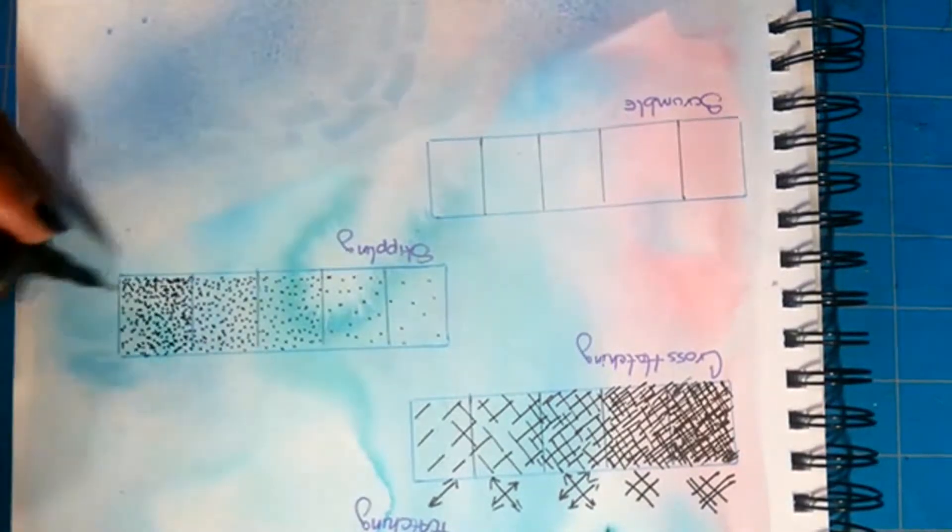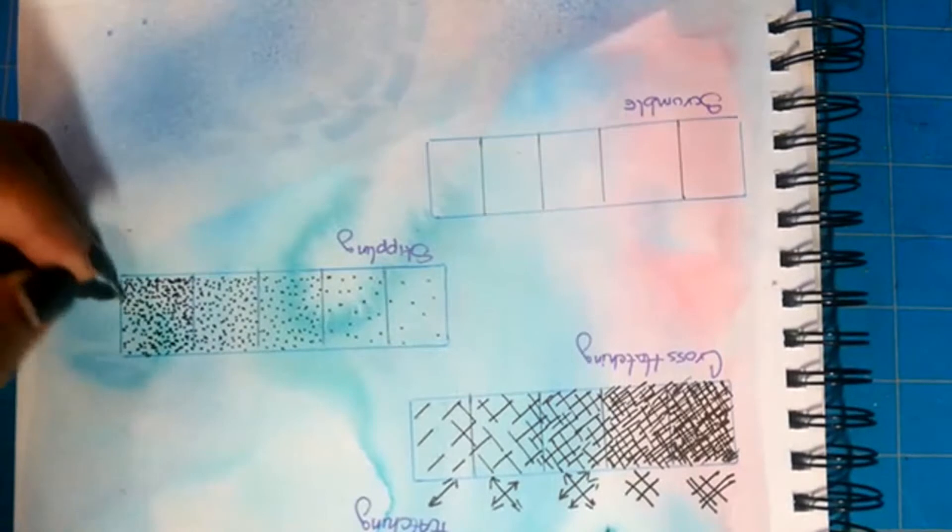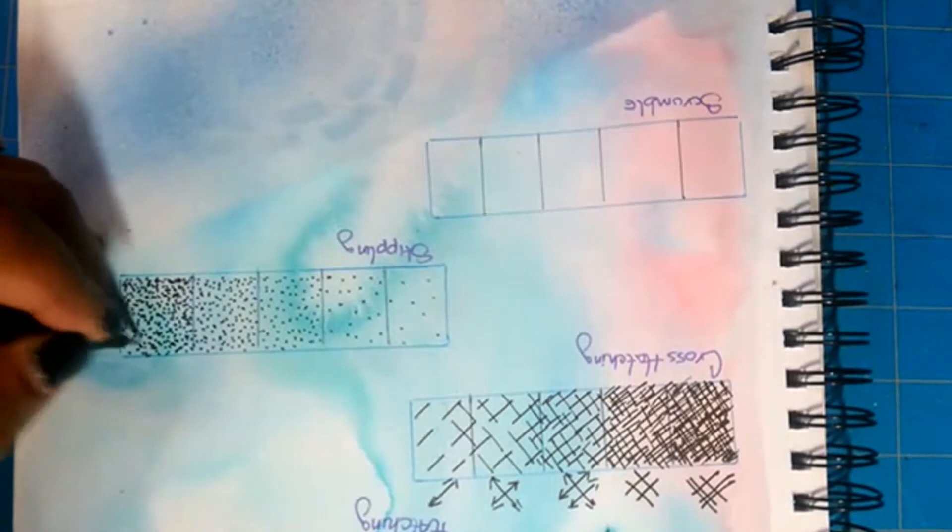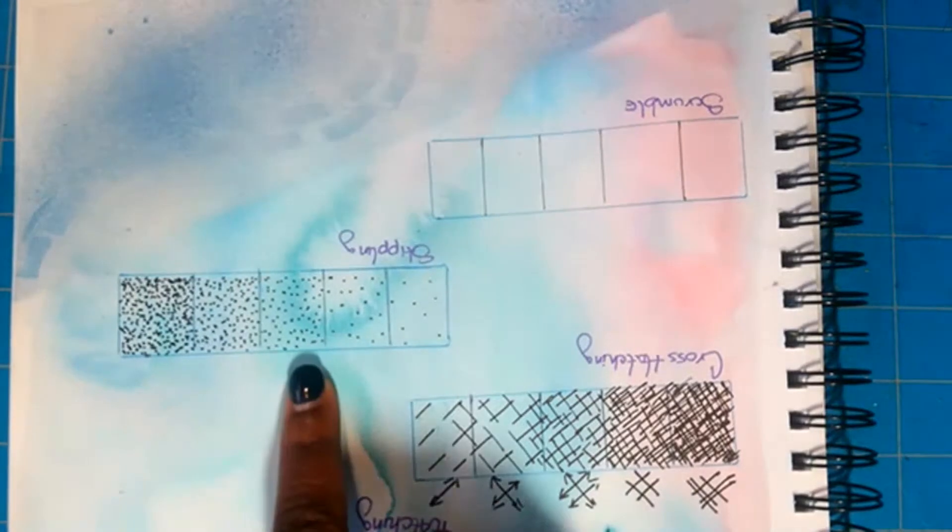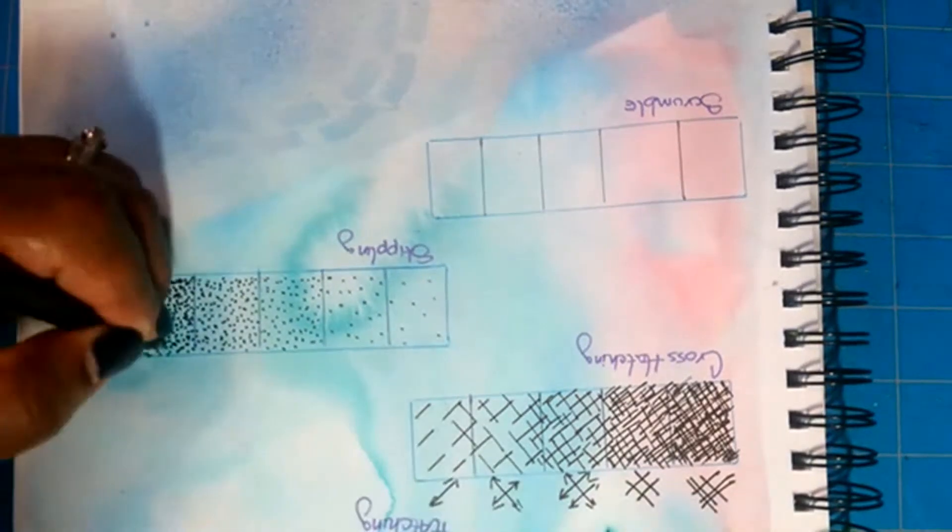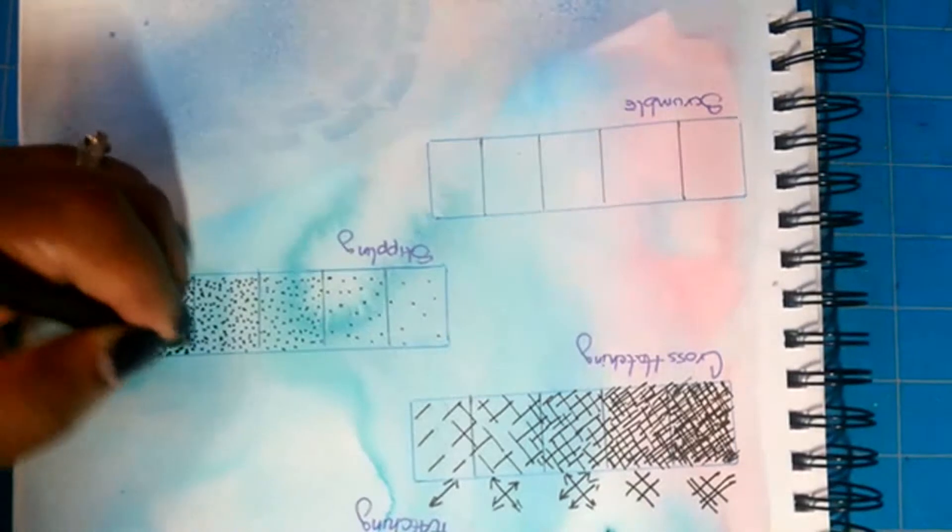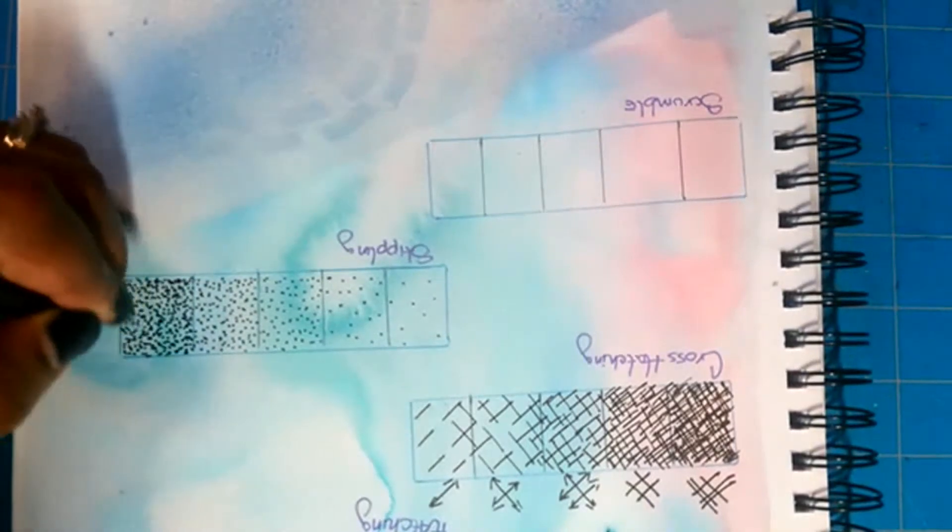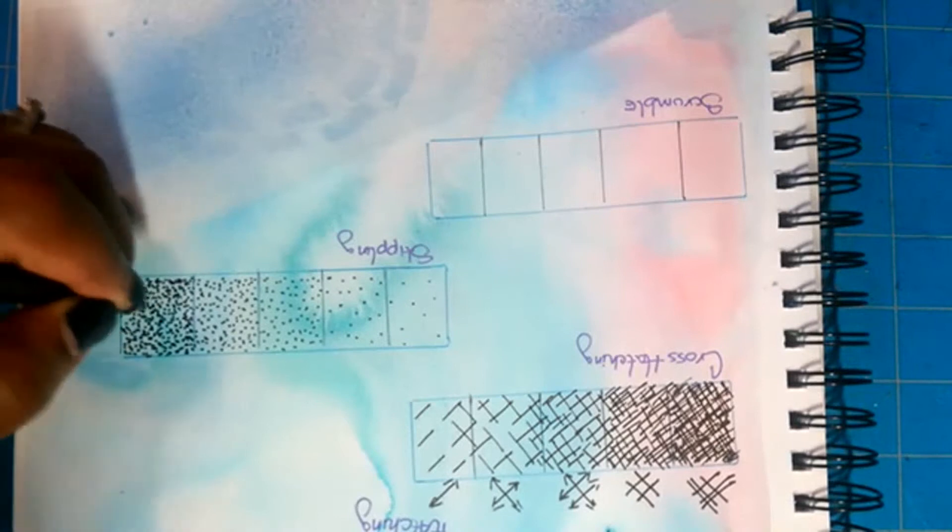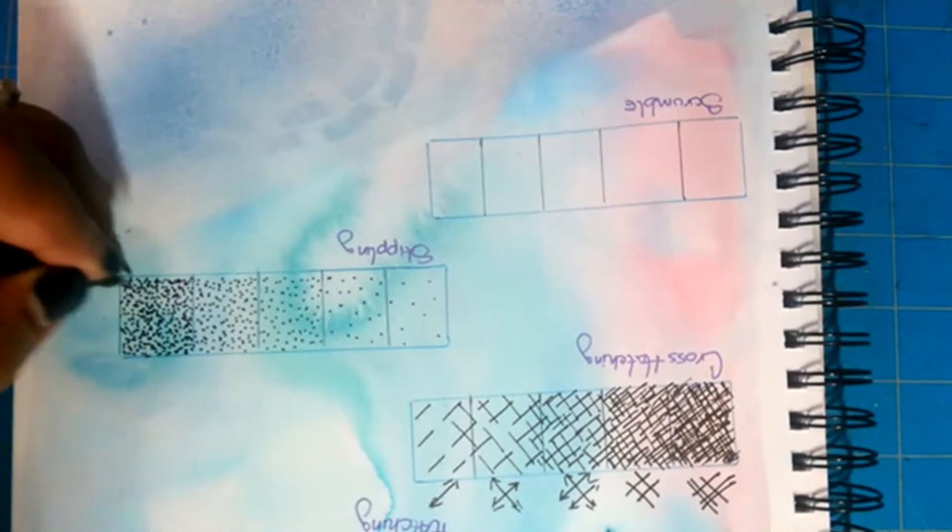And it should be really becoming darker than box four. And again, just like on the hatching and the cross hatching, what I'm noticing is that box four and three are very similar. I'm going to try to make five even darker that way I can go back and fix four and three.